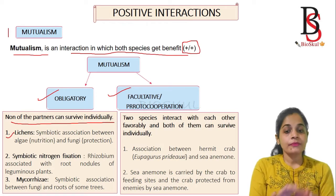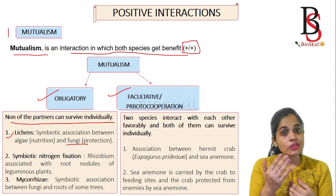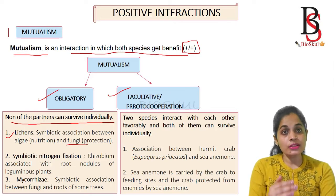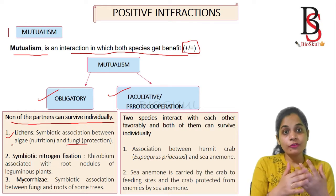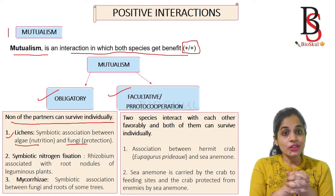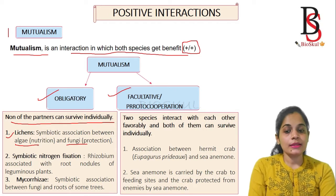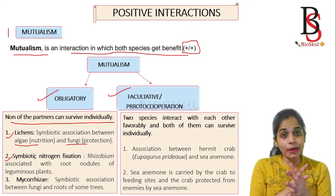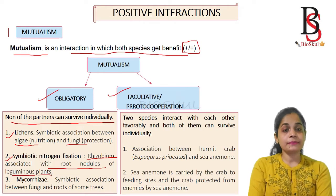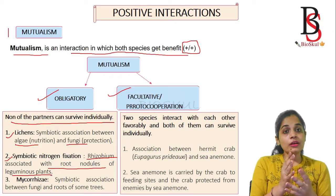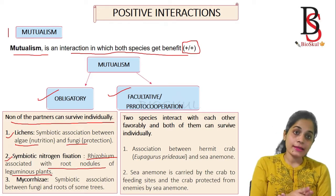Examples of obligatory mutualism: the first is lichens — an association between algae and fungi. Fungi are heterotrophic and lack chlorophyll, so they depend on algae for food. The fungi provide nutrients and minerals to the algae, while the algae prepare food using chlorophyll. The second example is symbiotic nitrogen fixation, where rhizobium associates with the root nodules of leguminous plants. Rhizobium converts atmospheric nitrogen into ammonia used by the plant, and the plant provides carbohydrates to rhizobium.